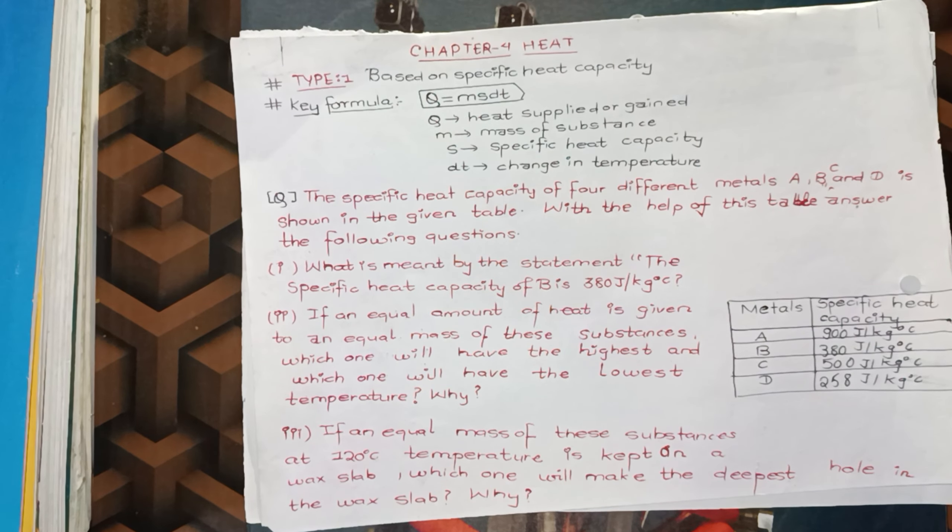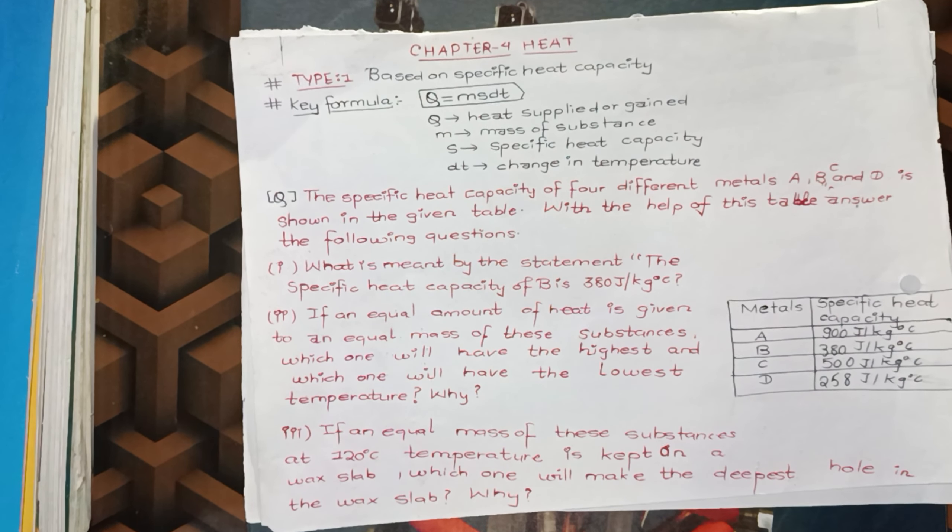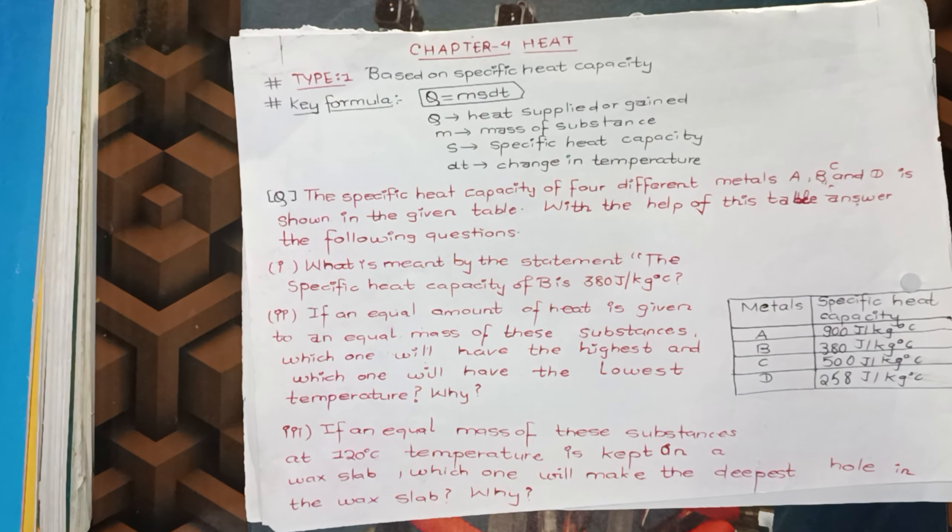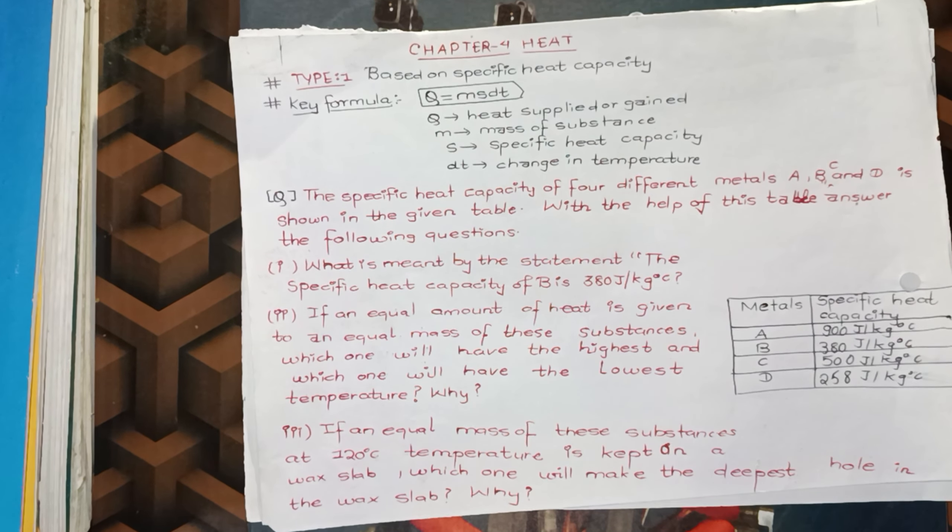So if the substance is 1 kg mass, we need to increase the temperature of 1 degree celsius. We need to increase the temperature of 1 kg. We need to increase the amount of heat.